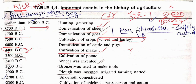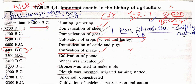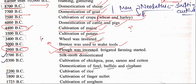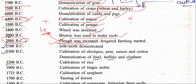The plow was invented in 2900 BC — but this was a wooden plow, not iron. Iron was not used until 1400 BC. Irrigated farming also started in 2900 BC. Note: irrigation from wells started in 5500 BC, while irrigated farming started in 2900 BC — these are two different things. Silk moth domestication and cultivation of chickpea started around 2300 BC.